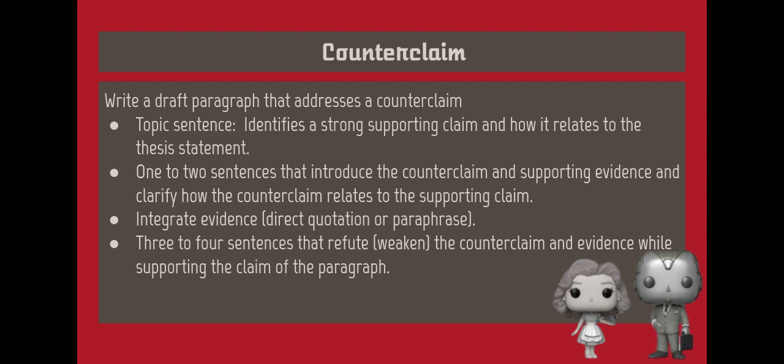Now you will write a draft paragraph that addresses a counterclaim to strengthen the writer's argument for the position presented in the thesis statement. You will write a topic sentence which identifies a supporting claim and how it relates to the thesis statement. You will write one or two sentences to introduce a counterclaim and associated evidence and clarify how that counterclaim relates to the supporting claim. You will integrate the evidence through direct quotation or paraphrase, then write three to four sentences that refute or weaken the counterclaim and evidence while supporting the claim of the paragraph. Remember that when you address counterclaims, you should use transitions which help clarify the relationships among the claims, counterclaims, and the evidence.